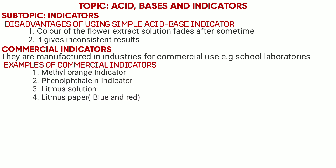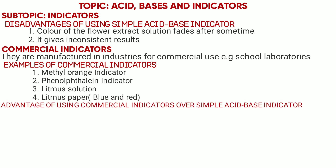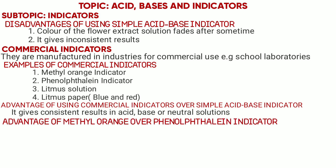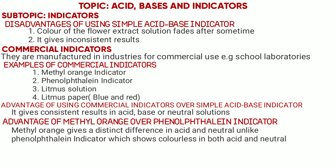The advantage of using a commercial indicator over a Simple Acid-Base Indicator is that it gives consistent results. When comparing Methyl Orange and Phenolphthalein: using Methyl Orange, one is able to distinguish between acid and neutral, unlike Phenolphthalein, which gives colorless in both acid and neutral solutions.